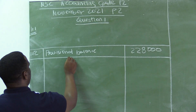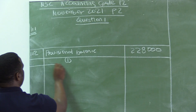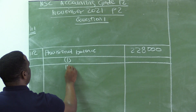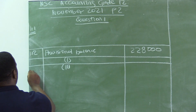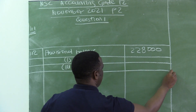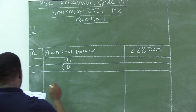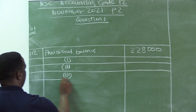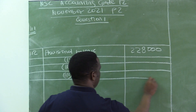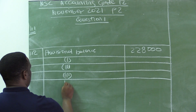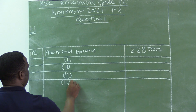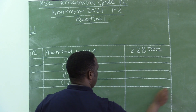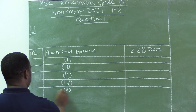The provisional balance section has roman figure 1, roman figure 2, roman figure 3, roman figure 4, and roman figure 5 listed in the table.